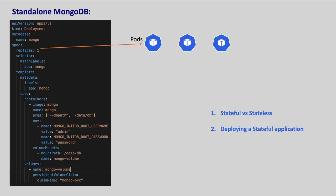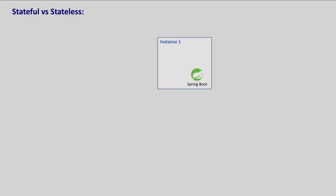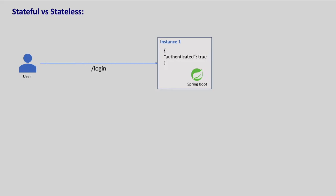Let us start by understanding the differences between stateful and stateless applications. Let's say we have a simple Spring Boot application that does a simple authentication. So when a client sends a request to login, we just set an authenticated flag to true in memory. When we send the same request again, we simply read this flag and return if the user is already logged in or not. So basically, we are storing the state of the current request and the next request is dependent on the state of the previous request. Such types of applications are called stateful applications, as we are storing the state — in this case, authentication state.